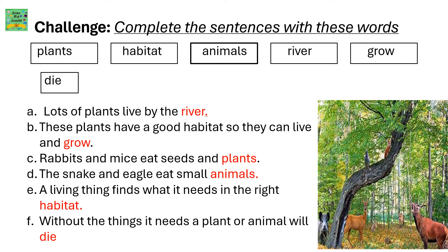Complete the sentences with these words: plants, habitat, animals, river, grow, and die. Lots of plants live by the river. These plants have a good habitat so they can live and grow. Rabbits and mice eat seeds and plants. The snake and eagle eat small animals. A living thing finds what it needs in the right habitat. Without the things it needs, a plant or animal will die.